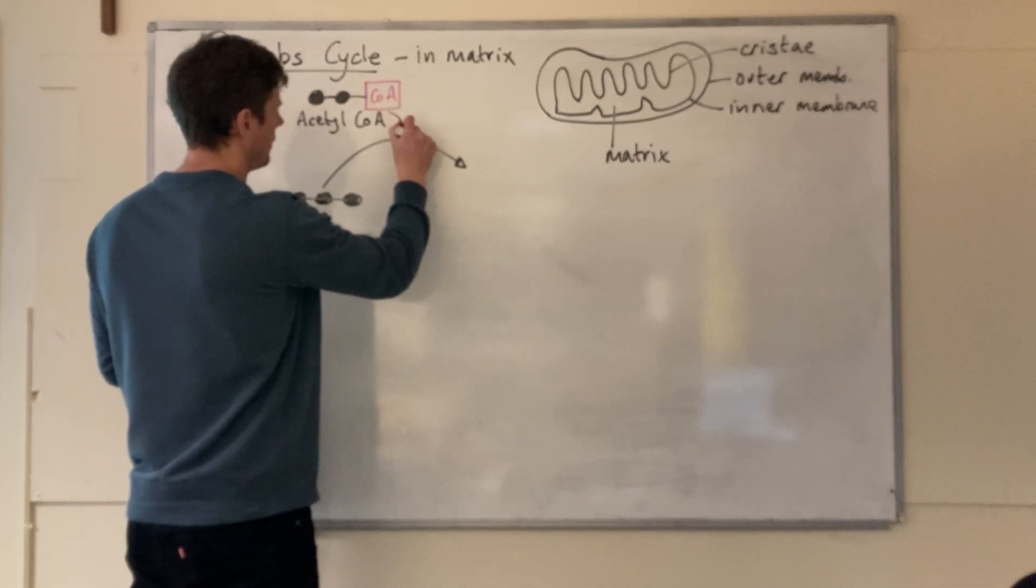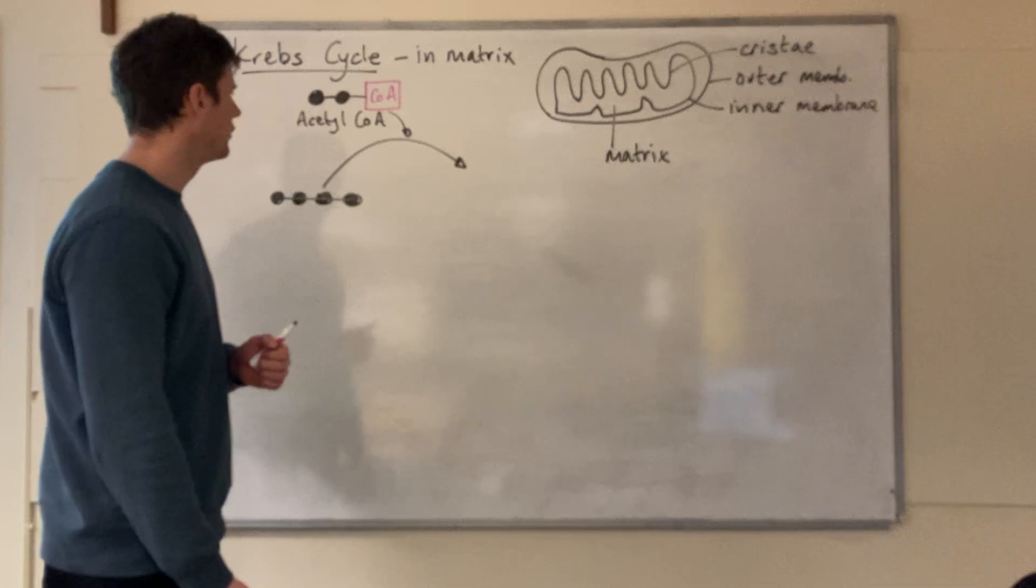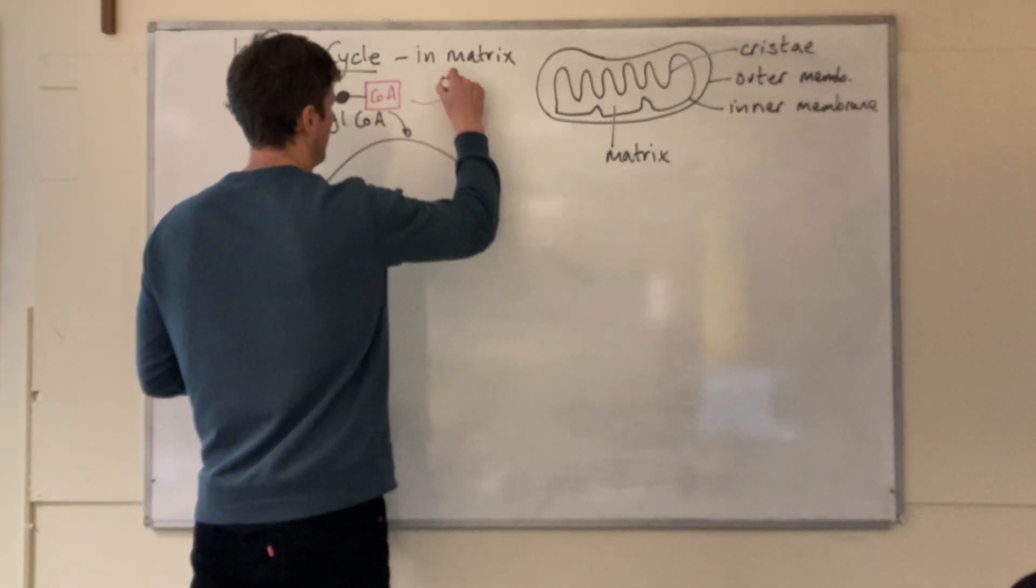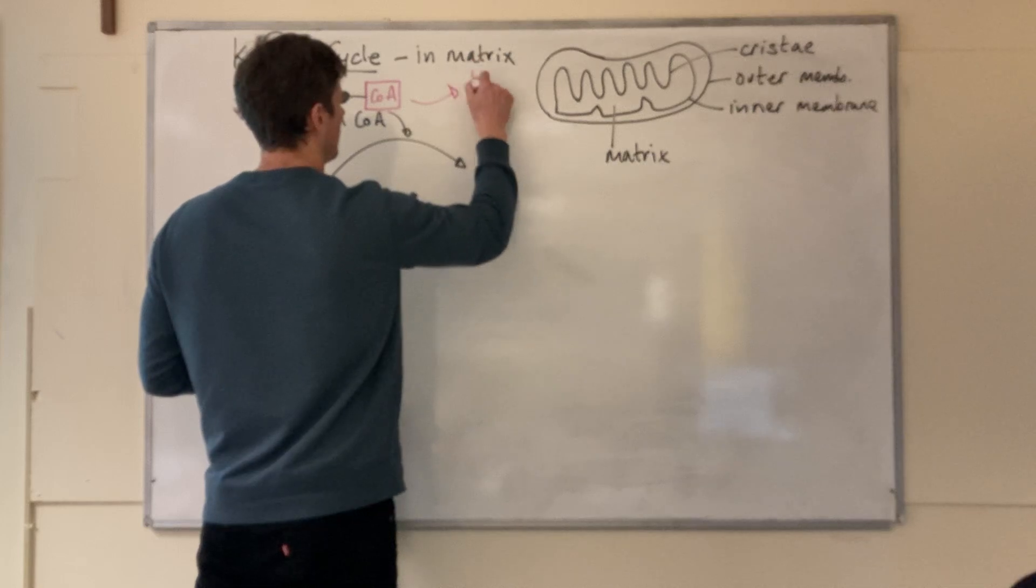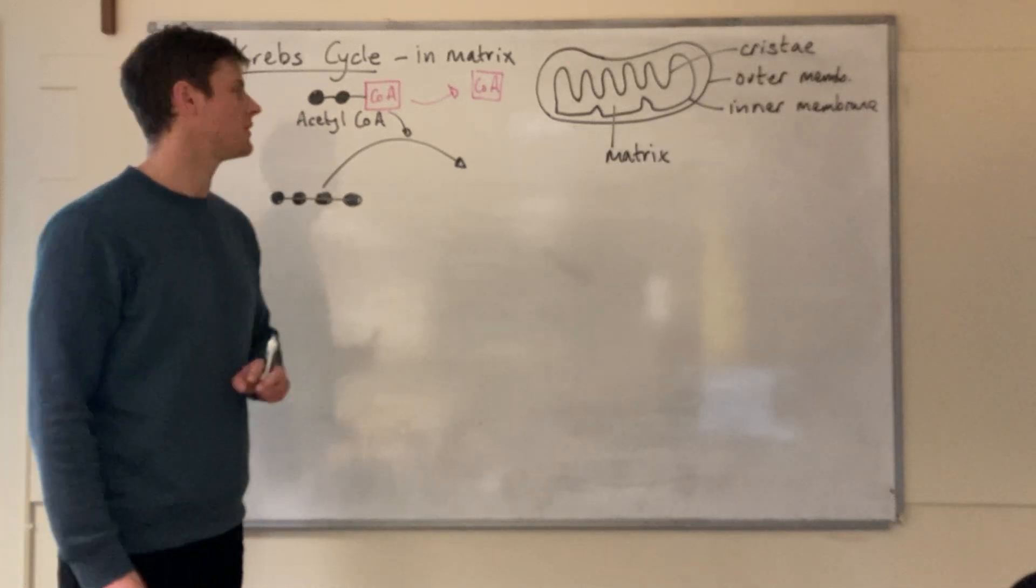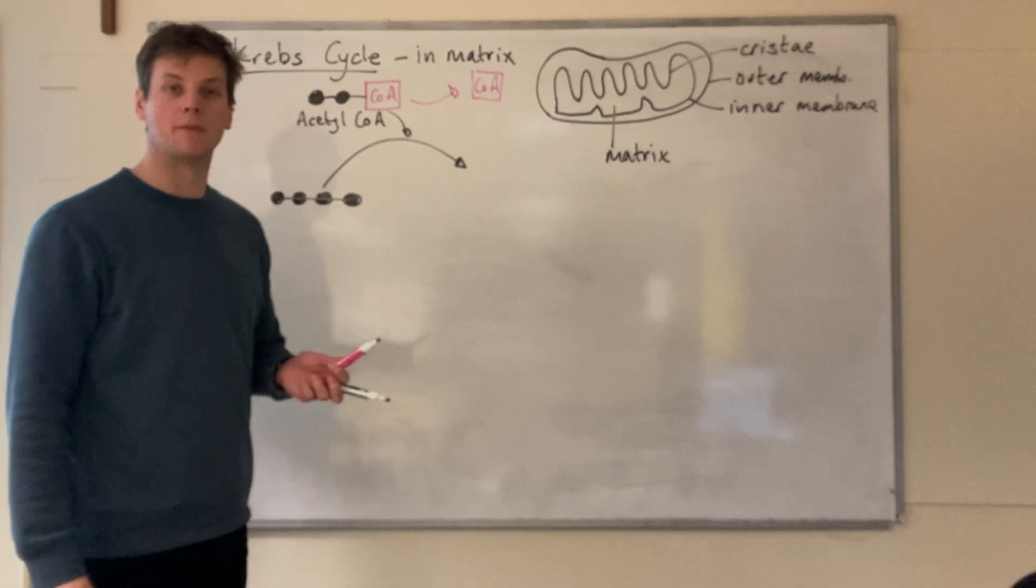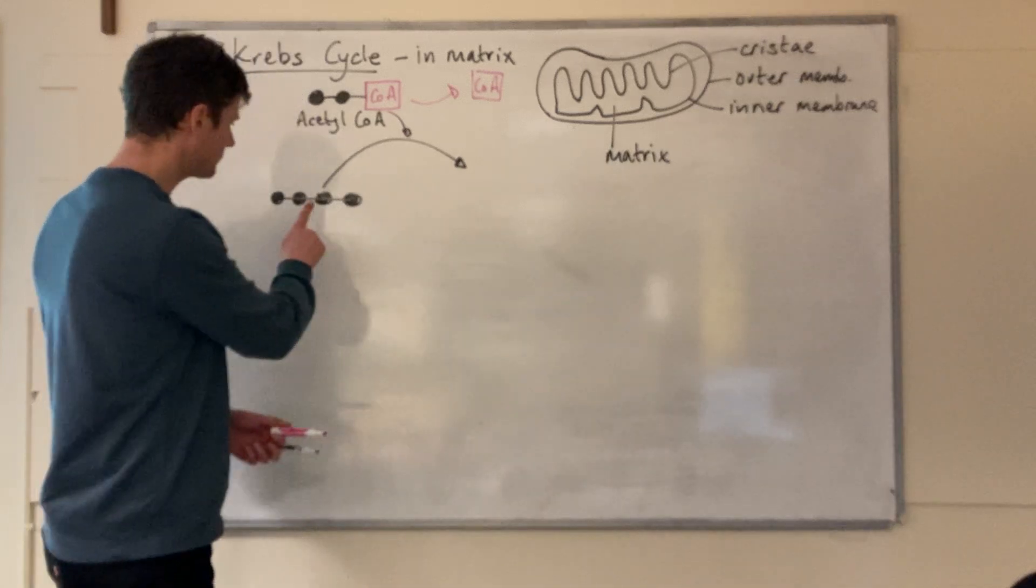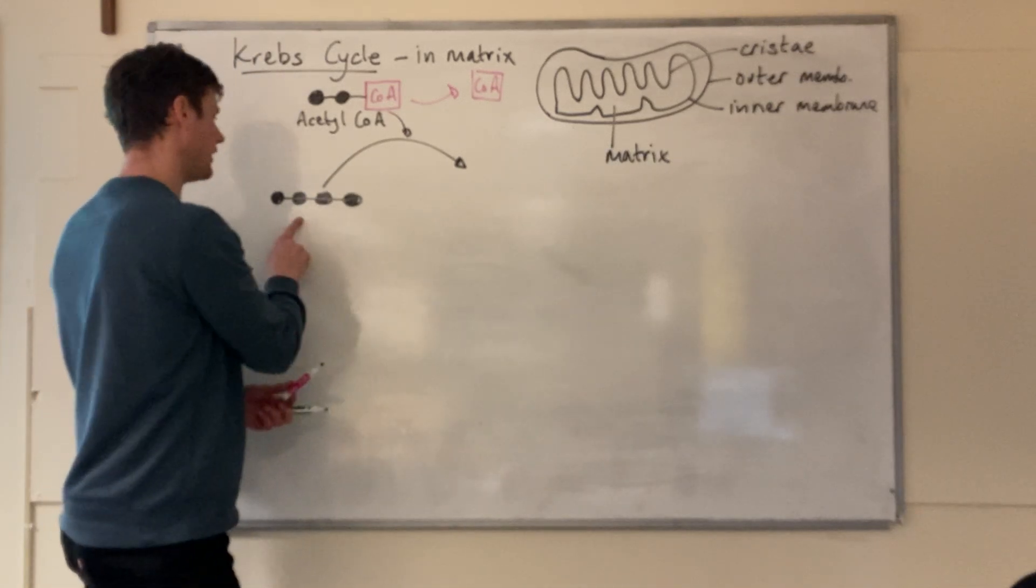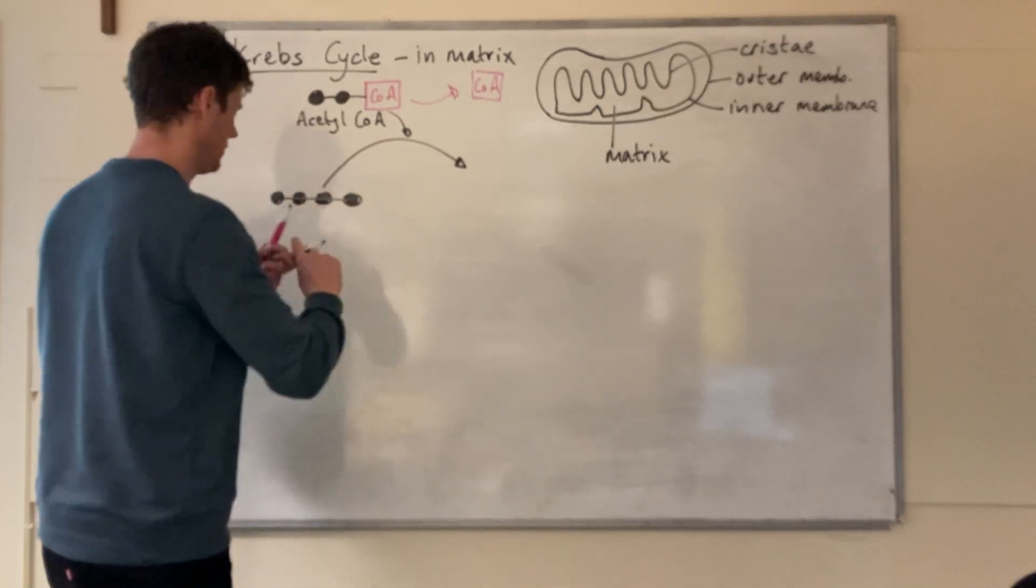In the first stage, the acetyl group separates from the coenzyme A. The CoA then disappears back to the link reaction to collect more acetyl groups. The Krebs cycle finishes with a four carbon molecule.